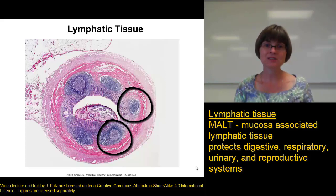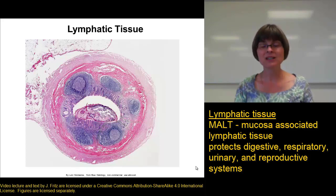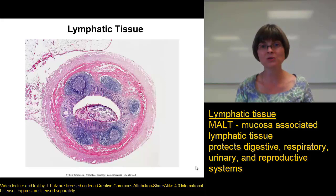In this picture, you can see some patches of lymphatic tissue called Peyer's patches, which contain lymphatic cells to destroy things that could get through the layer of mucosa in the digestive system and keep them from damaging the body further.